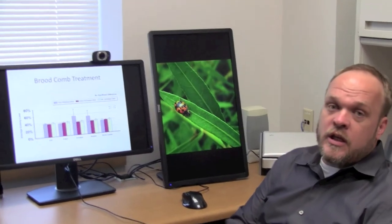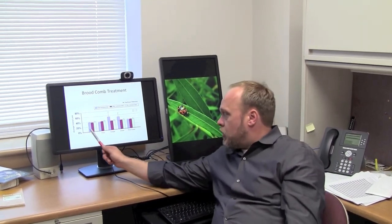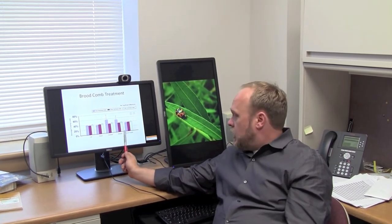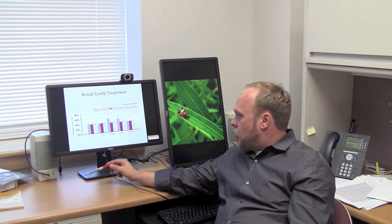Of course, a lot of beekeepers do things to treat their comb in order to preserve it so that there's no small hive beetle or wax moth that might damage it, or to try to get rid of any parasite loads or pathogen loads. So some people will cull comb, freeze comb, some people will fumigate it or irradiate it and use wax moth crystals.